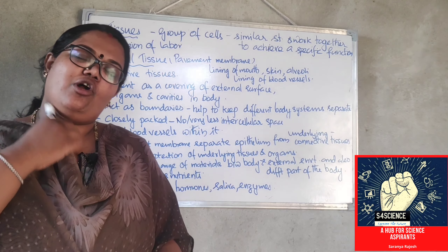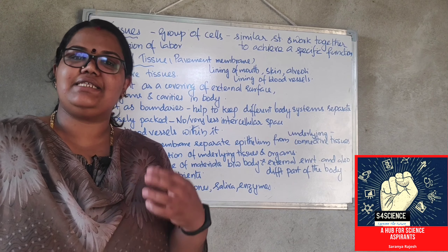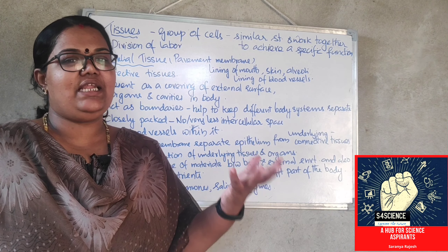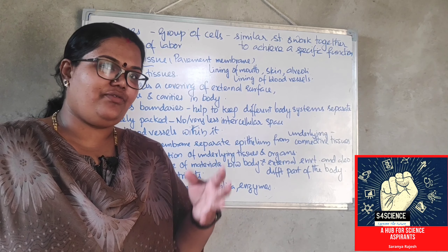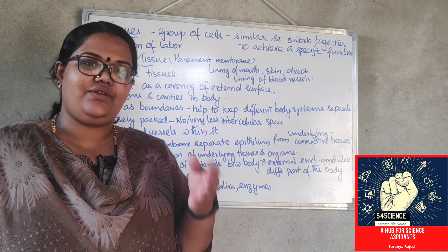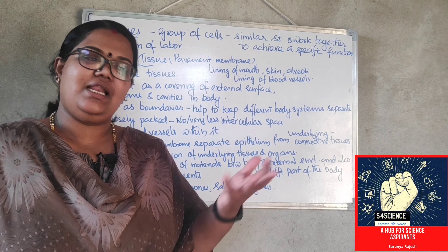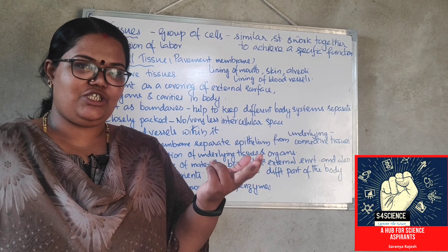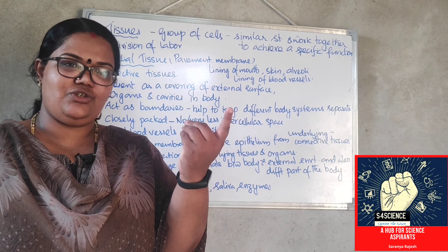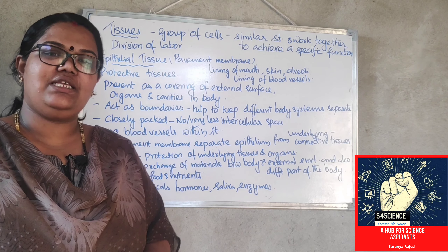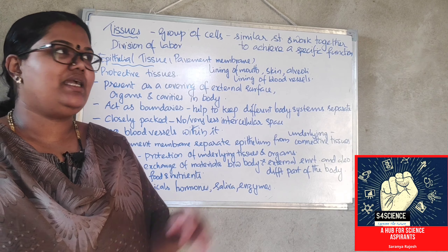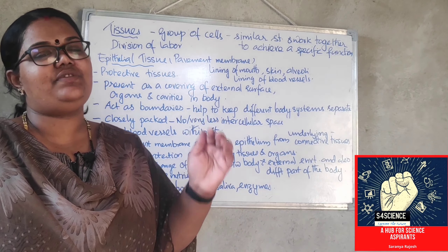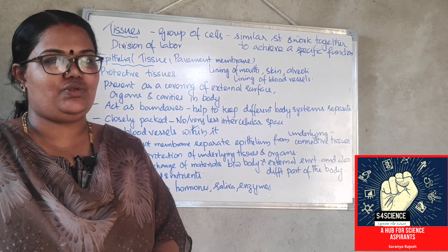We have already learnt about animal tissues in class 9. There are mainly 4 different types of tissues — epithelial tissue, nervous tissue, muscular tissue and connective tissue. All these we have learnt. Now in class 11, we are going into detail about all these tissues.